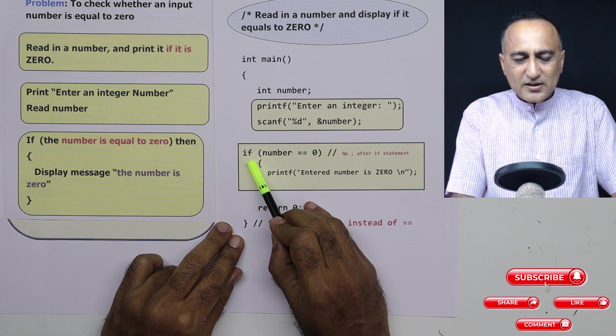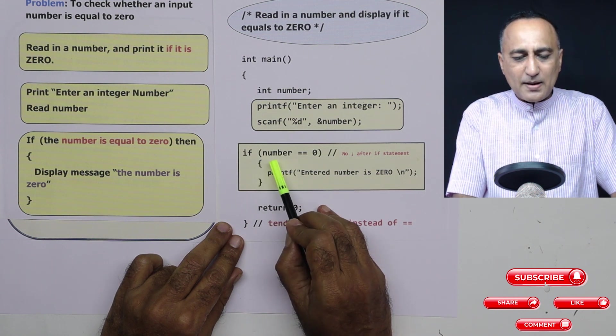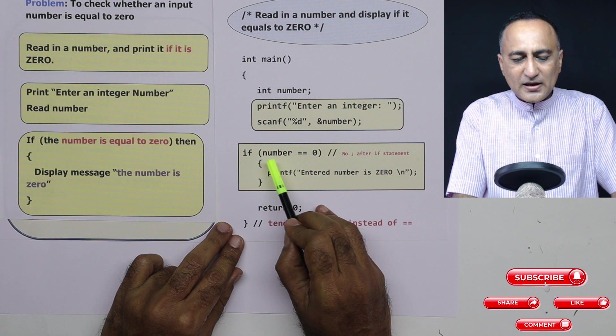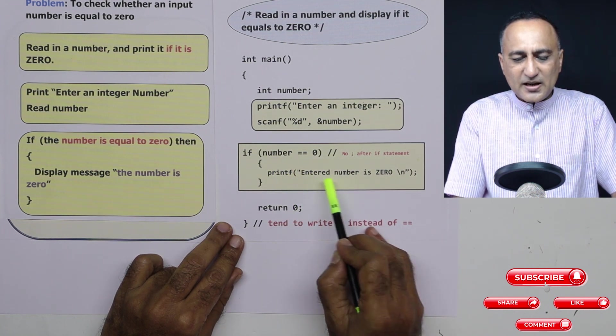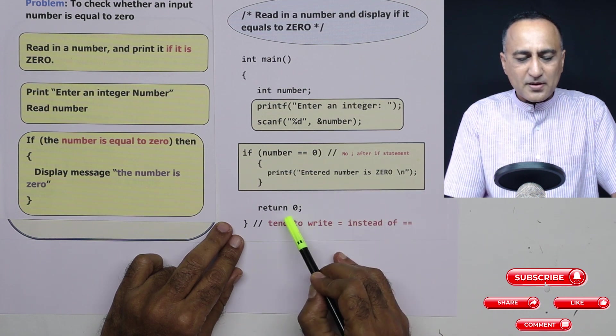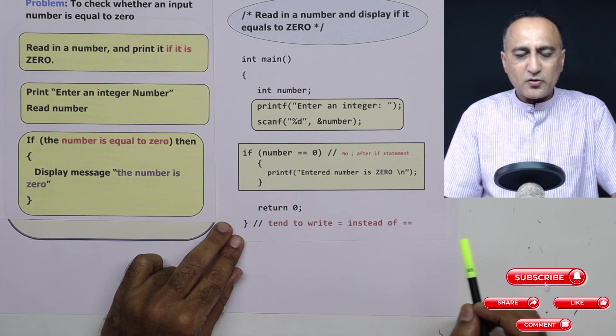Then using the facility provided by C I am comparing if number equal to zero, that is I am printing the message number entered is zero and I am ending the piece of code.